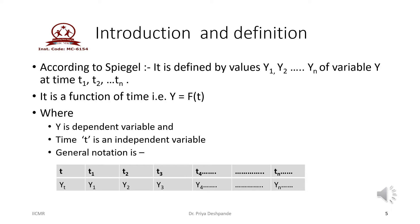According to Spiegel, time series is defined as the values y1, y2, y3, up to yn of variable y, taken at different time intervals t1, t2, t3, up to tn. Basically, time series is always a function of time, so it is always denoted by y = f(t), where y is the dependent variable and time t is always an independent variable. The general notation of the time series is given in a table.